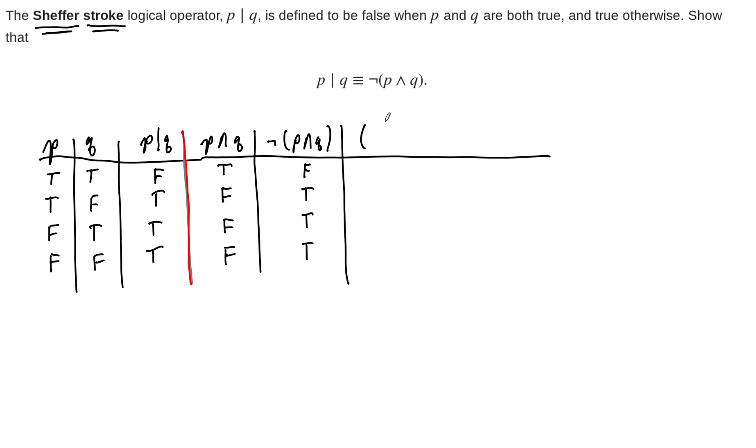And that is to say that P Sheffer stroke Q, biconditional, with not P conjunction Q, P and Q. So this biconditional should be a tautology. Remember, the biconditional, the truth values of a biconditional, are going to be true if both the left and the right propositions have the same truth value. So F double arrow F is true. T double arrow T, true, true, true.